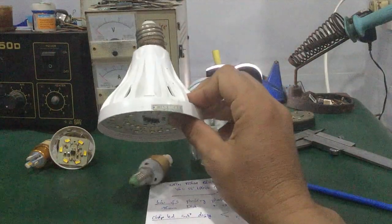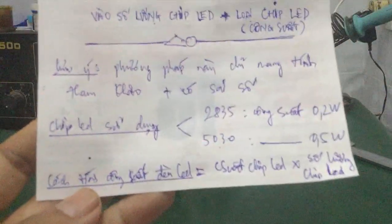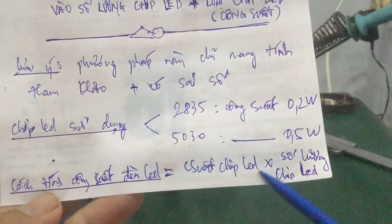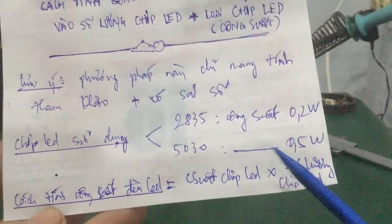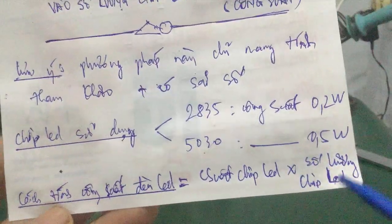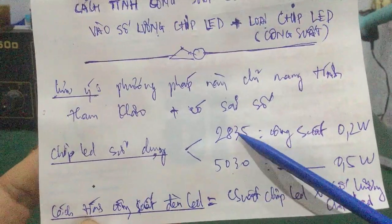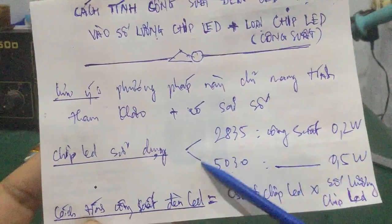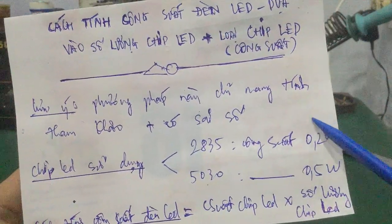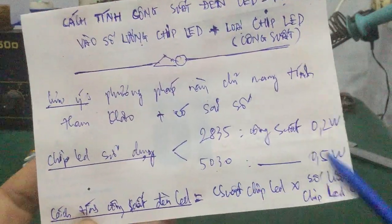Cách tính công suất đèn LED: các bạn lấy công suất của chip LED nhân với số lượng chip LED trong bóng đèn. Mình đưa ra công thức tính tham khảo nha — công suất chip LED nhân với số lượng chip LED. Ví dụ nó dùng chip LED 2835 thì các bạn lấy 0,2W nhân với số lượng chip LED. Hoặc dùng chip LED 5030 thì lấy 0,5W nhân với số lượng chip LED.